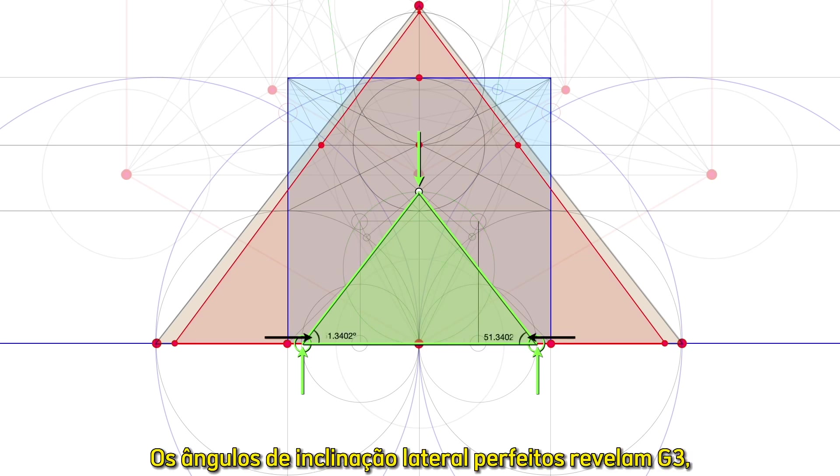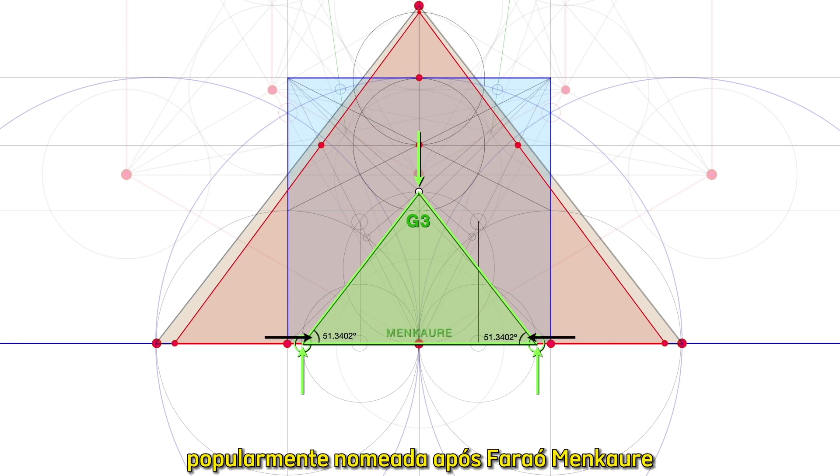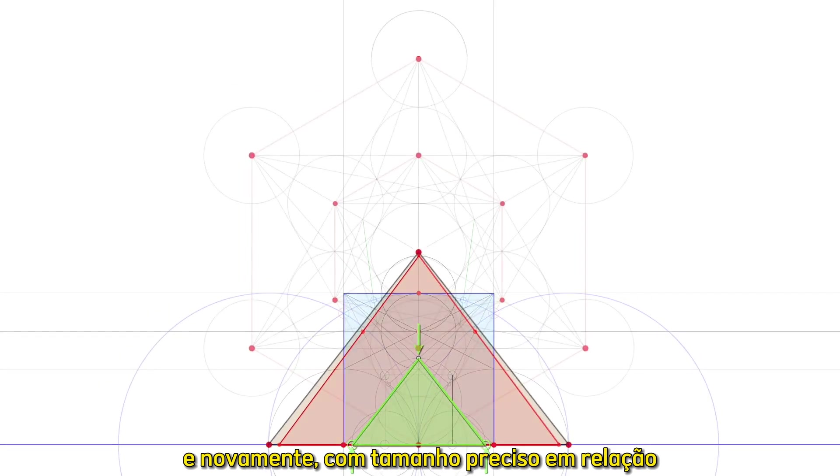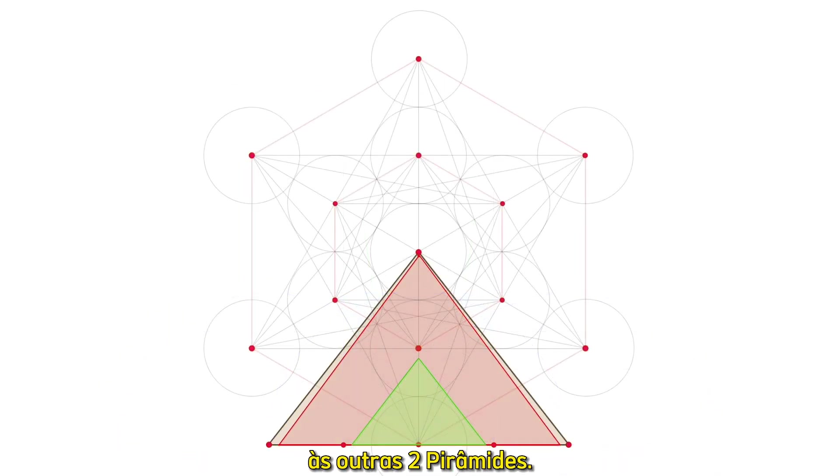Here she is. The perfect side slope angles reveal G3, popularly named after Pharaoh Menkaure. And again, in precise size relationship to the other two pyramids.